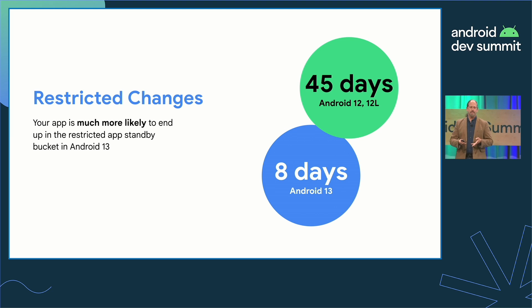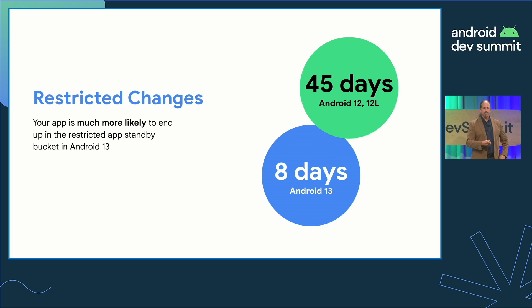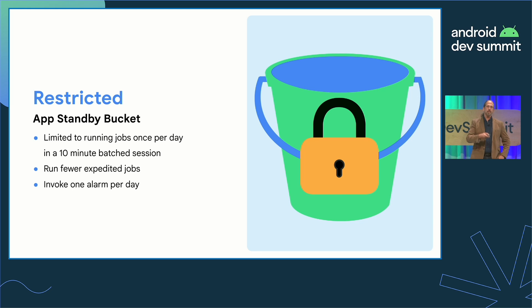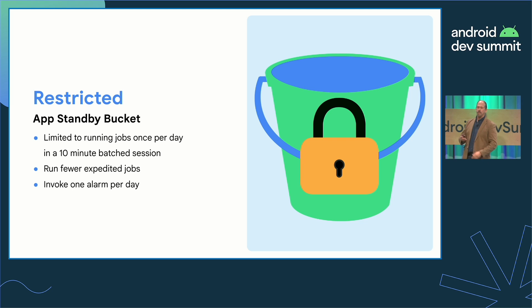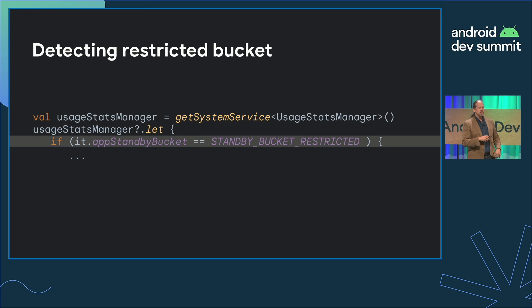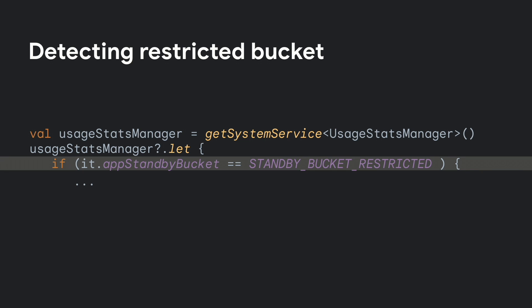On Android 13, your app requires a much shorter period of inactivity to be placed in the restricted app standby bucket. In restricted mode, you can run jobs once per day in a 10-minute batched session, run fewer expedited jobs, and invoke one alarm per day. If your app detects that it's in restricted mode, make sure it schedules any necessary operations appropriately, and it's worth logging what state your app is in when running jobs and alarms to help track down any unanticipated behavior.